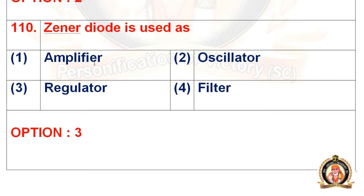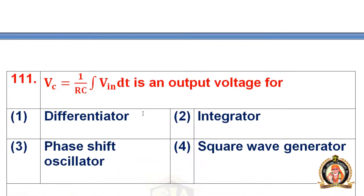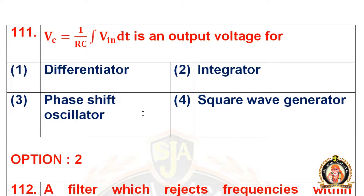Question 110: The Zener diode is used as. The options are amplifier, oscillator, regulator, and filter. The right option for question 110 is the third option, that is regulator. The Zener diode is used as a regulator.